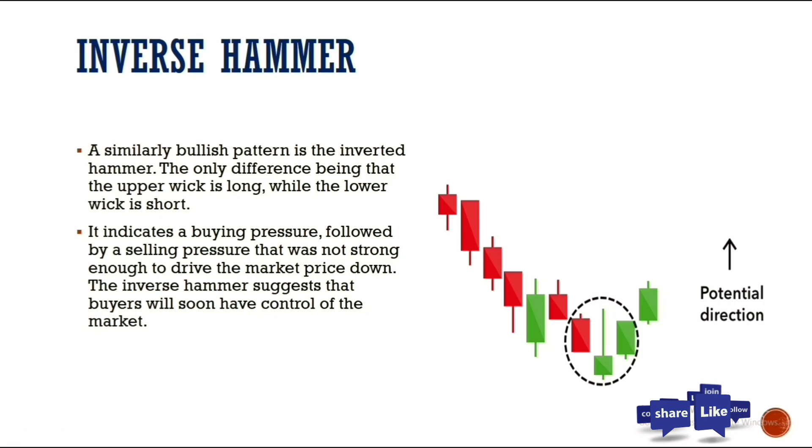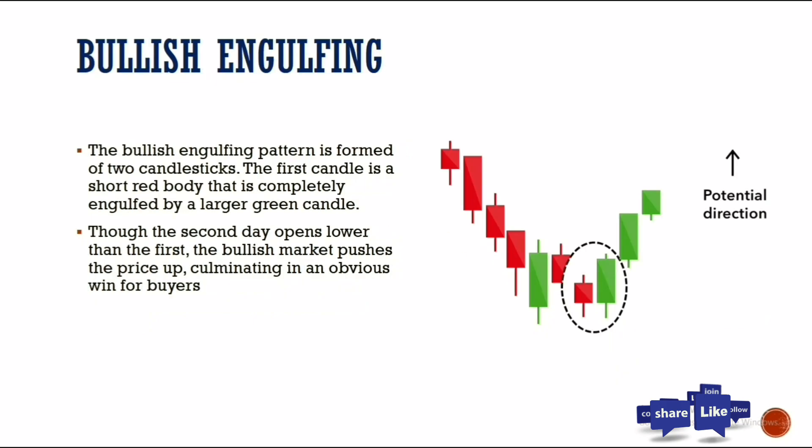The inverse hammer indicates buying pressure followed by selling pressure that was not strong enough to drive the market down. The sellers were not strong enough, which is why the candlestick formed in this way. Let's also look at the next pattern: the bullish engulfing.